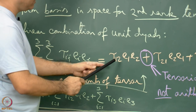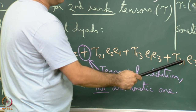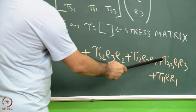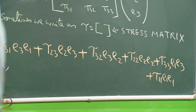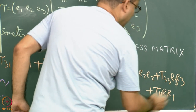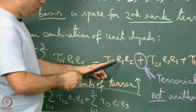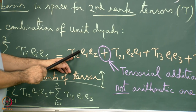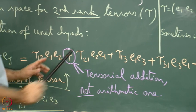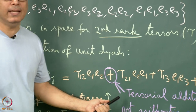The expression becomes: tau_12 E1E2 + tau_21 E2E1 + tau_13 E1E3 + tau_31 E3E1 + tau_23 E2E3 + tau_32 E3E2 + tau_22 E2E2 + tau_33 E3E3 + tau_11 E1E1. It is a linear combination — the first suffix of tau matches the first E suffix and the second suffix of tau matches the second E suffix. The plus symbols represent tensorial addition, not arithmetic addition.